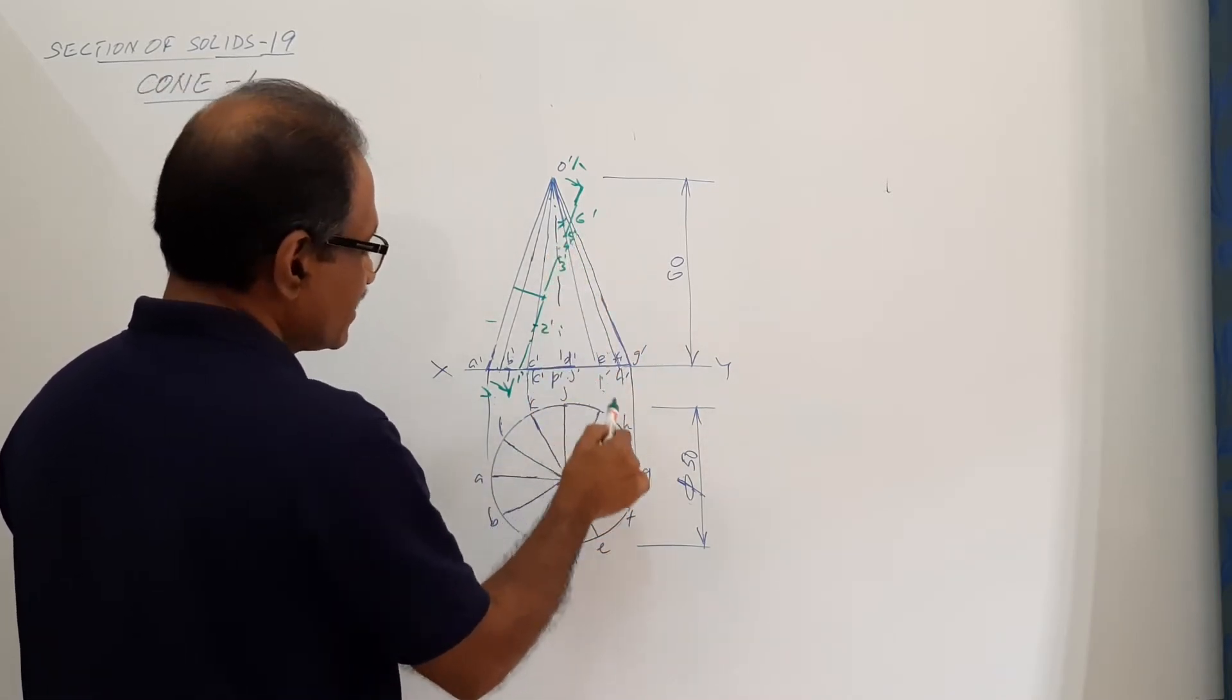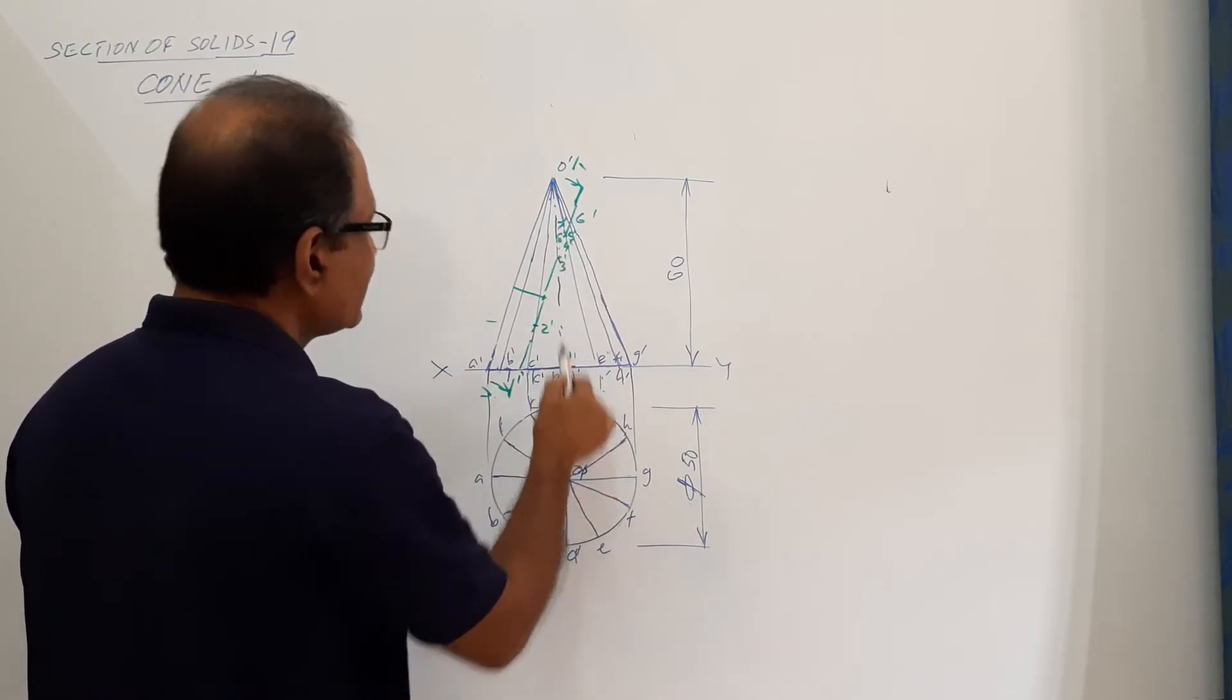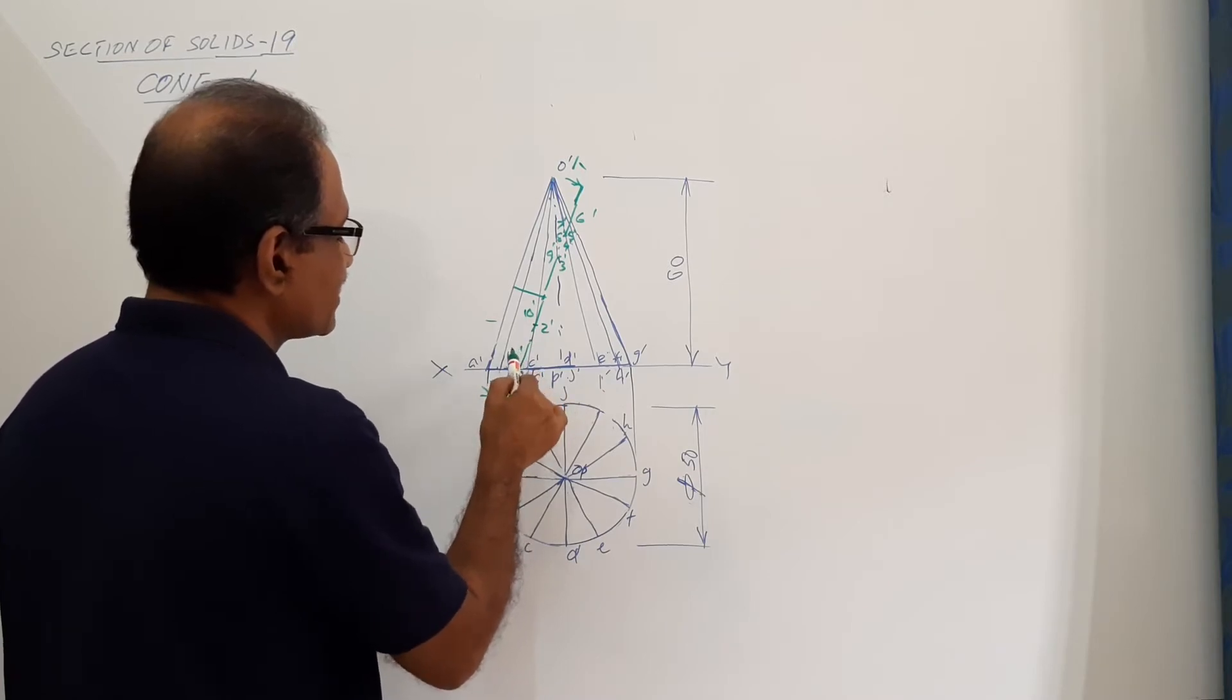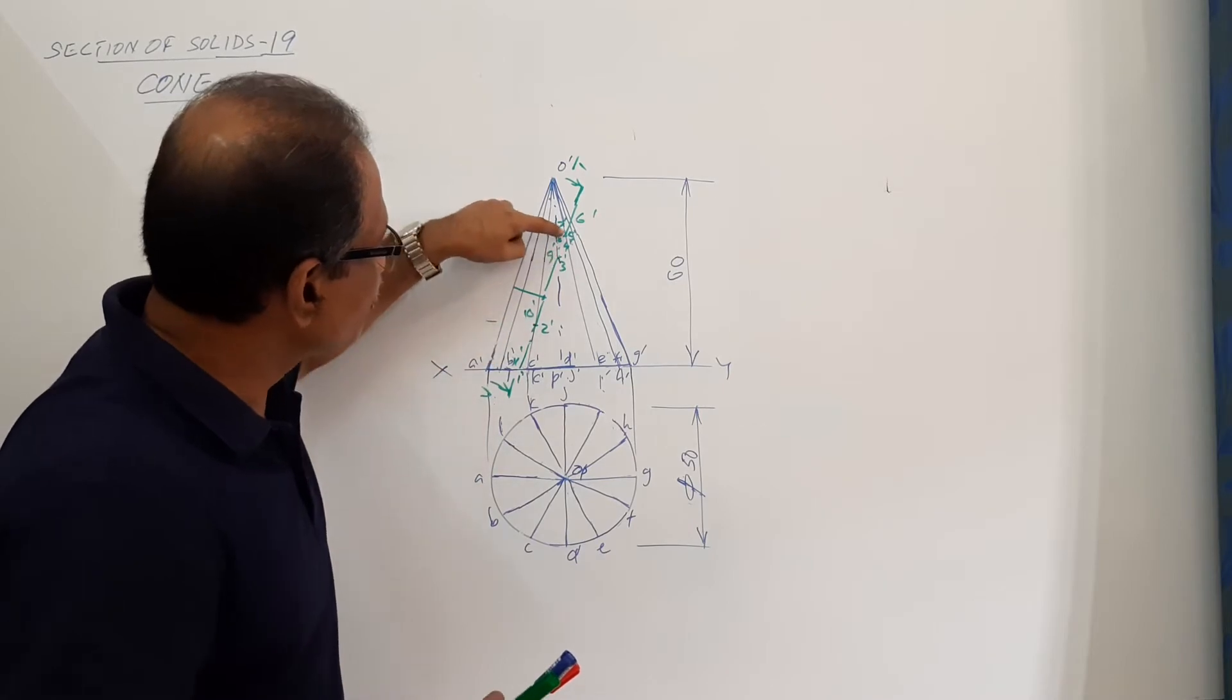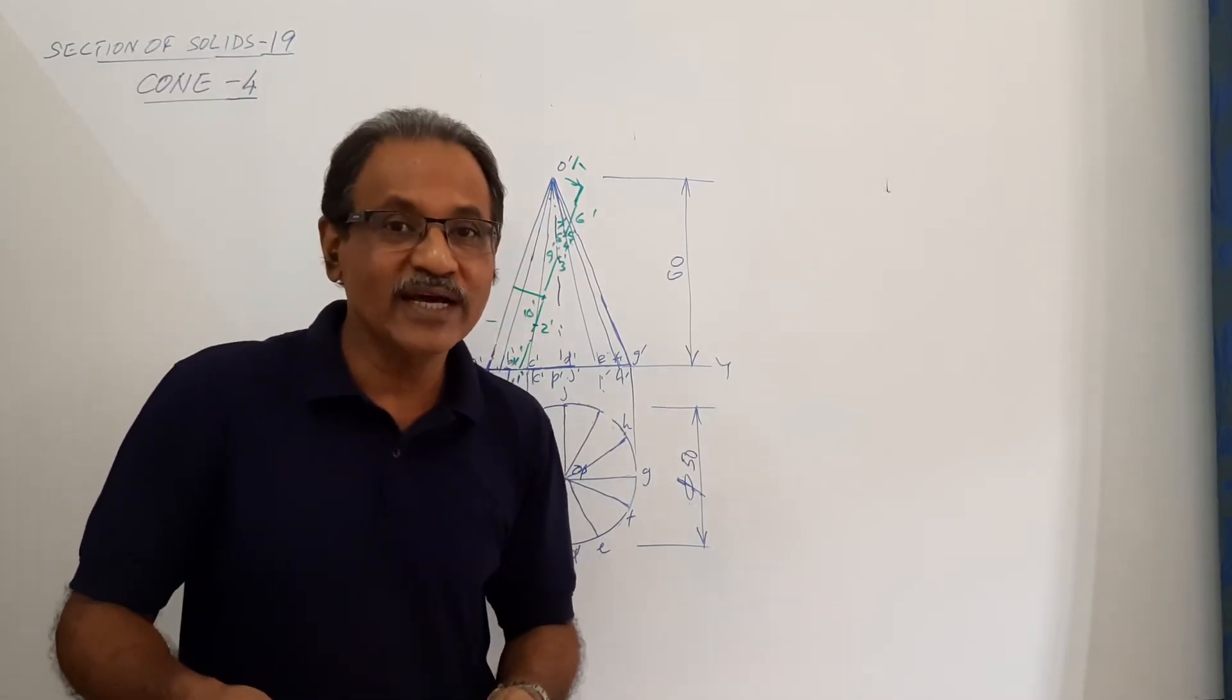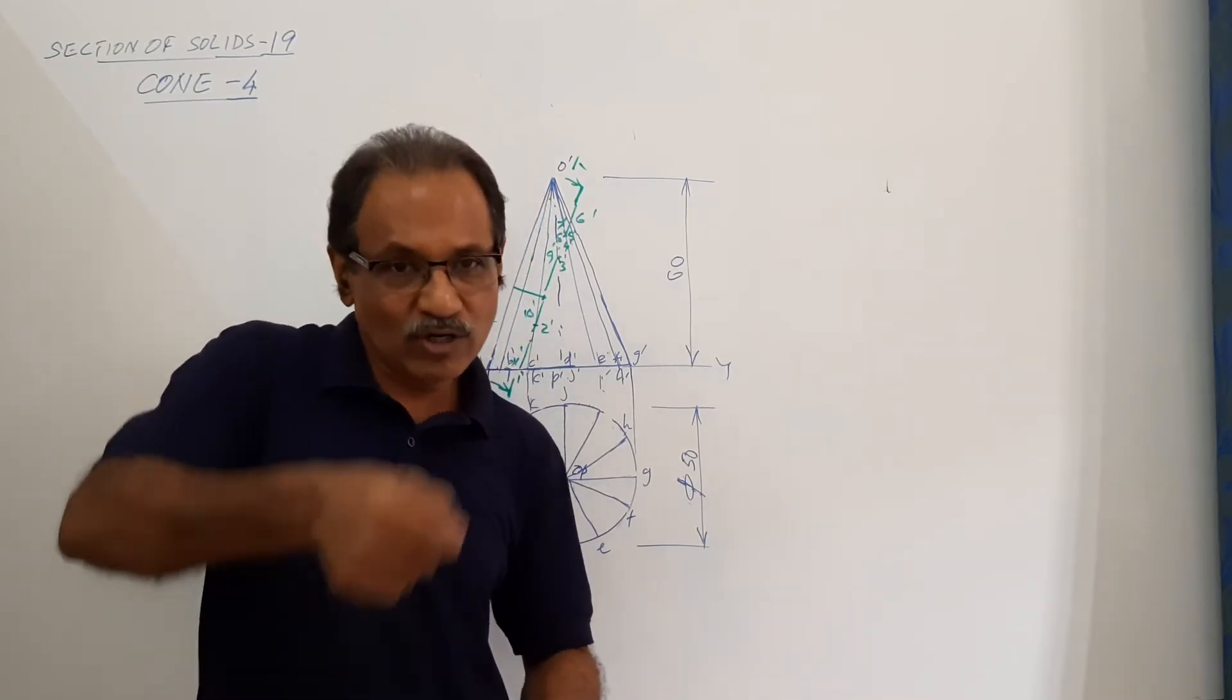O dash I dash at eight dash, O dash J dash at nine dash, O dash K dash at ten dash, and the base again at eleven dash. There are eleven points. You are going in an order around the body: one, two, three, four, five, six, seven, eight, nine, ten, eleven.